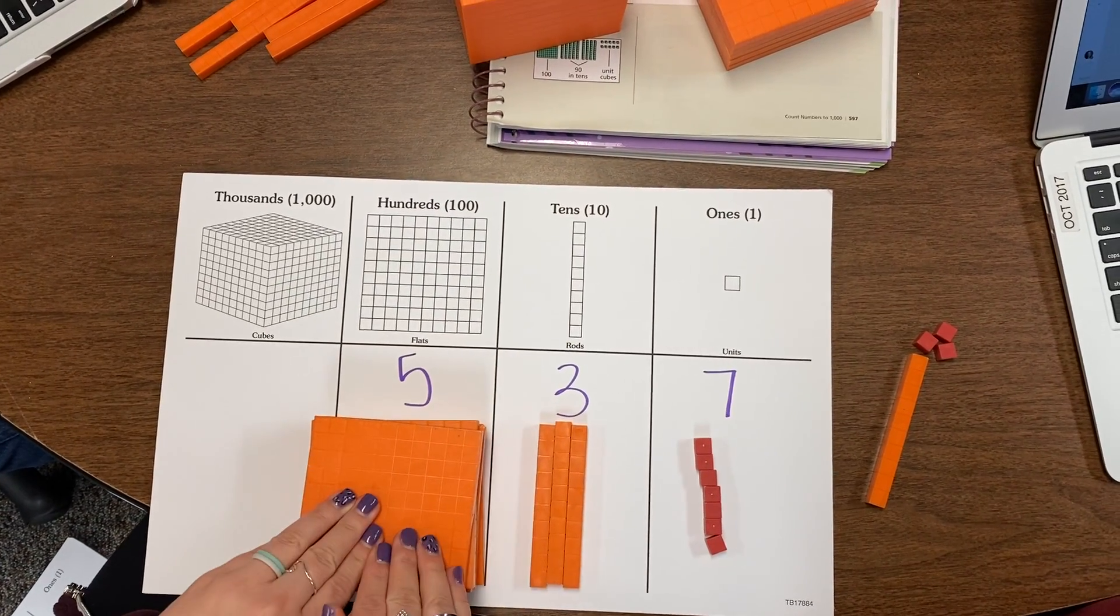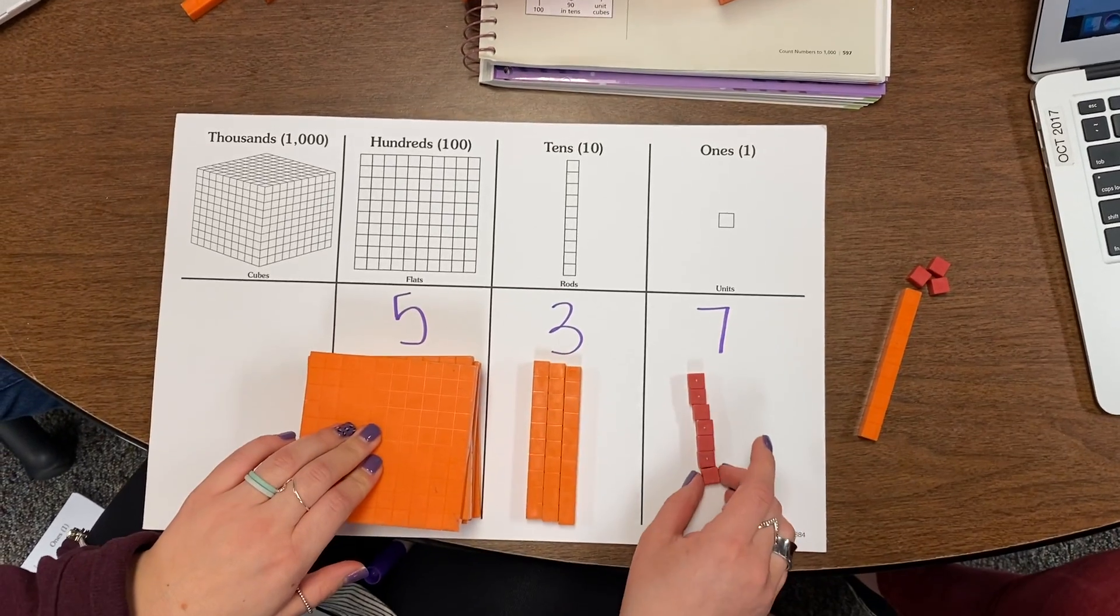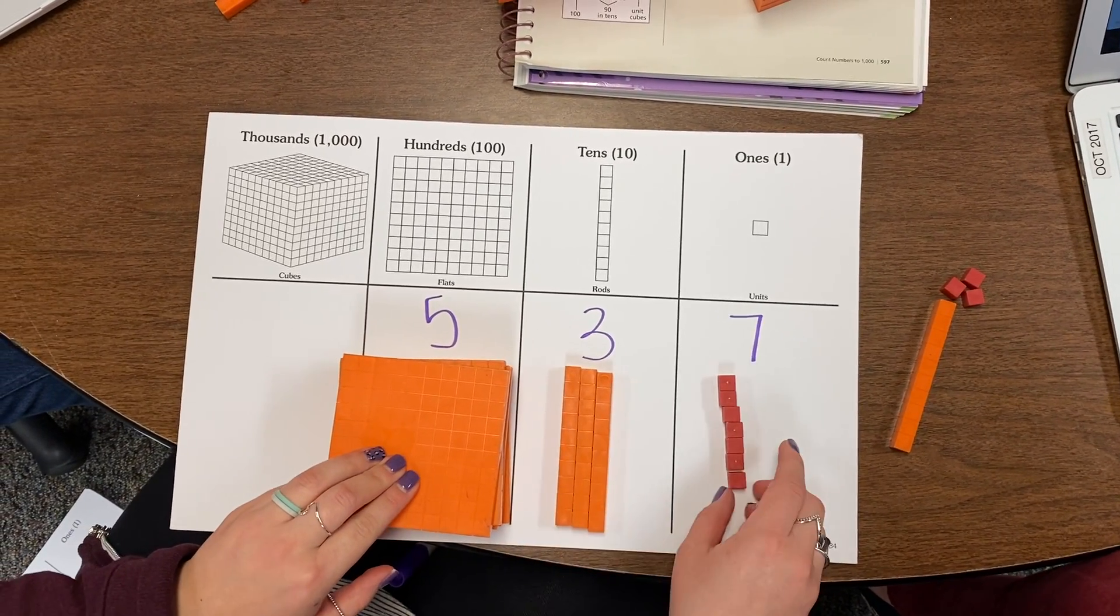So we have to make sure it matches. We have 500, we have 3 10's sticks which makes 30, and we have 7 1's. So our number is 537.